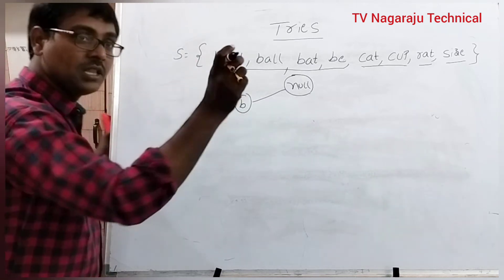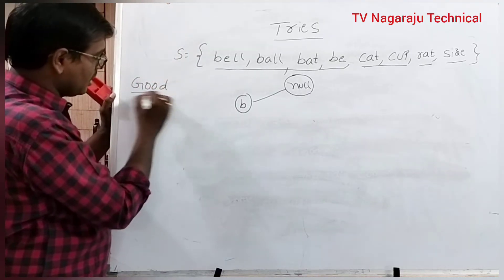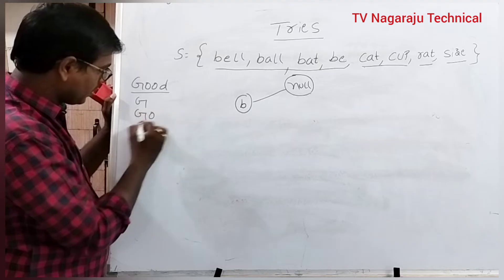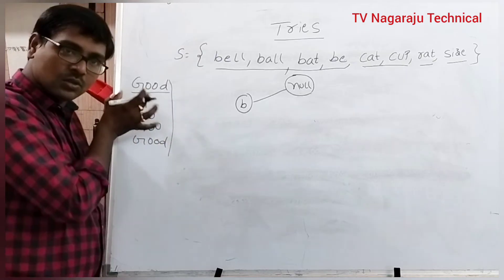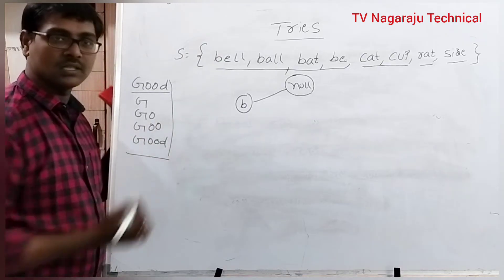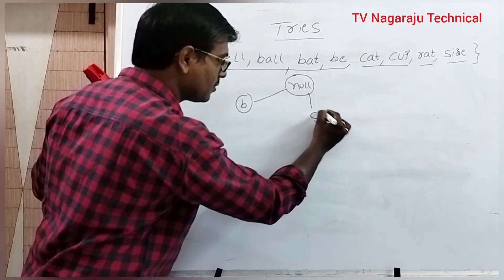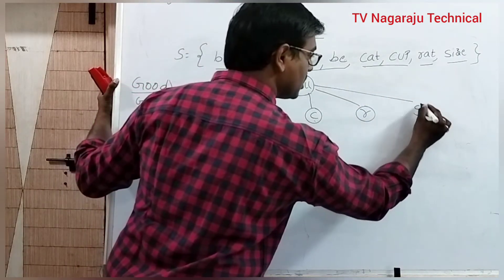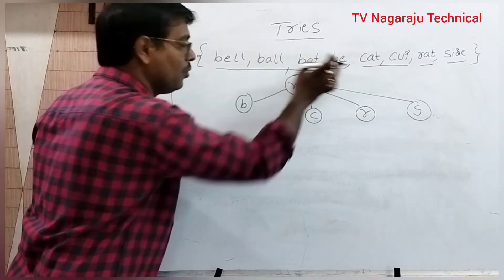Here we are writing all the strings that start with B, that means by prefix. For example, assume 'good' is the string. The prefixes are: G is called a prefix, GO is a prefix, GOO is a prefix, and so on. Coming to B — in B we have 4 strings.